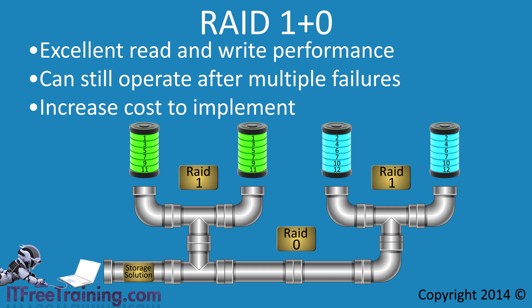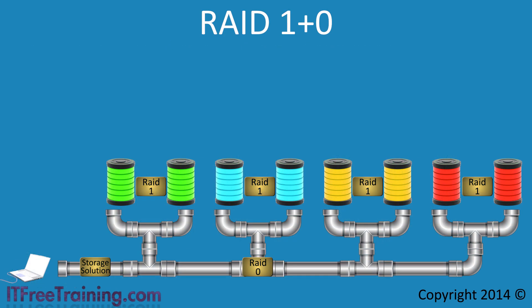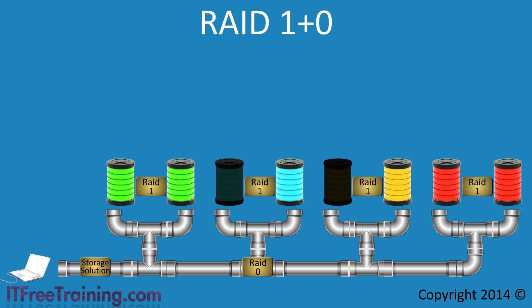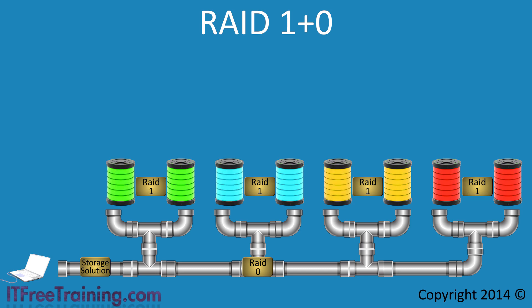It is hard to tell how multiple failures are handled with only 4 drives, so let's look at a RAID 1 plus 0 in a bigger implementation. In this implementation there are 8 drives in total. Half the available space is lost due to redundancy, but as the data is spread across 4 drives, read and write performance is quite good. If a failure of one drive occurs, there is a drive with the same data available to recover from. If a second or even third drive fails, the RAID is still recoverable. The only time the RAID is not recoverable is when two drives holding the same mirrored data both fail.